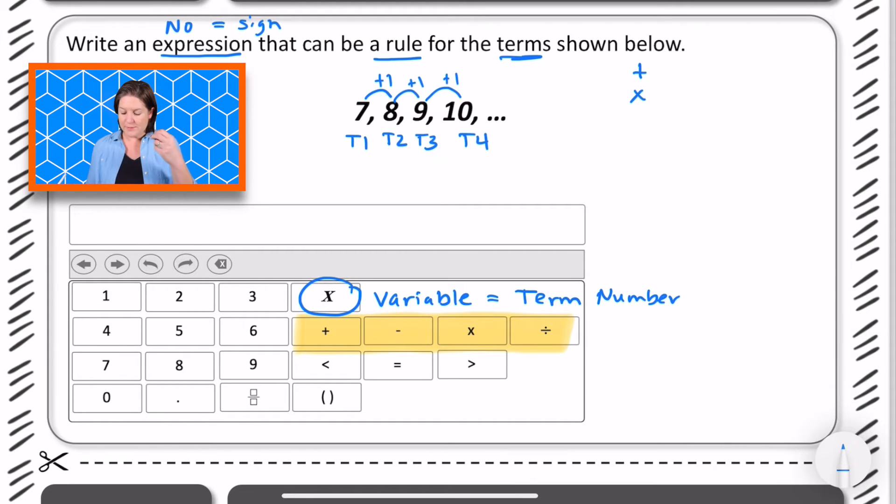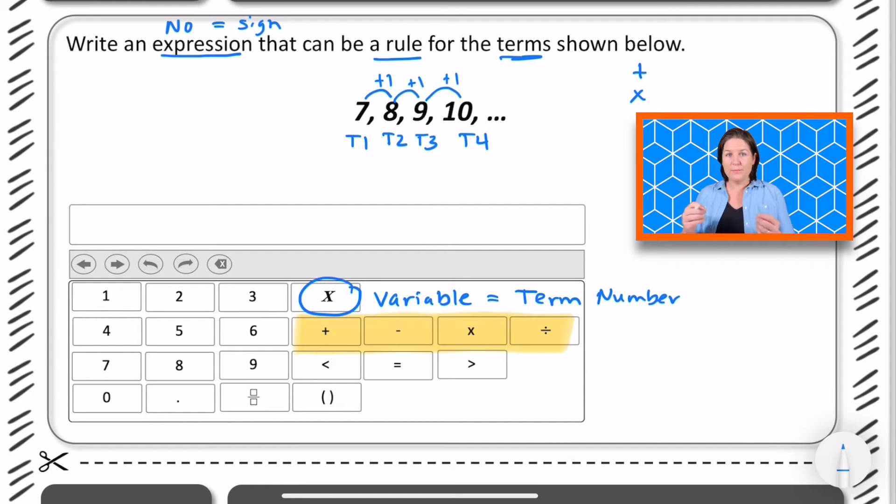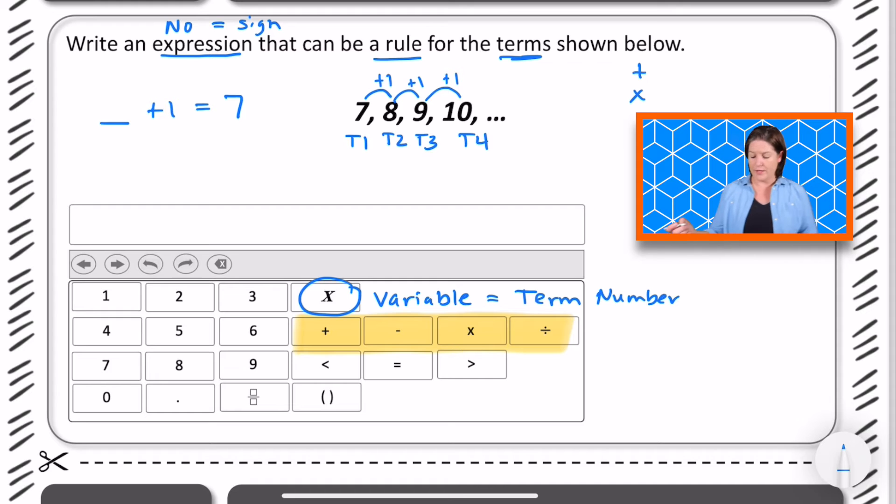So the way I'm seeing it is, it's what plus one, right? We've got our term number. So what plus one is going to give us seven? Well we know that six plus one equals seven. So in order to get that first term, we have to have six plus, and then this one right here is actually the term number, it's term number one. And we're going to list that as six plus x.